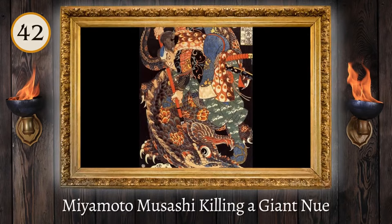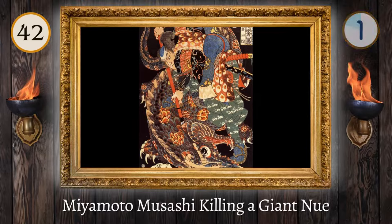Using an Ukiyo-e style, who created Miyamoto Musashi killing a giant nue between circa 1797 and 1861? Utagawa Kuniyoshi.